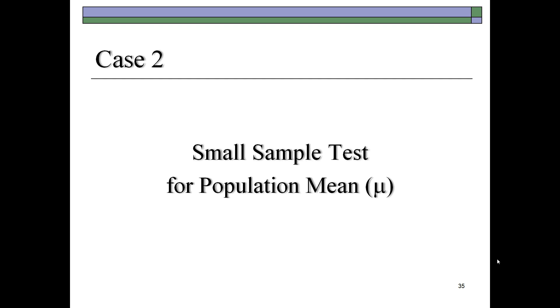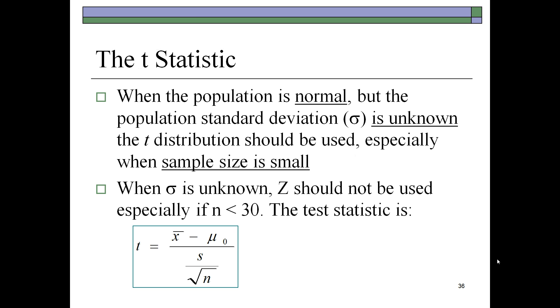In our case number two of hypothesis tests of the population mean, we consider a case where small samples are used. We recall that when the population is normal but the population standard deviation is not known, the t-distribution is to be used, especially when the sample size is small.